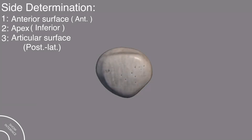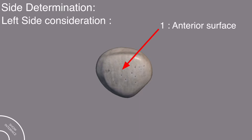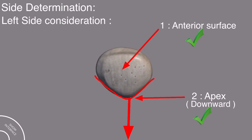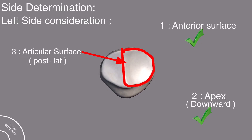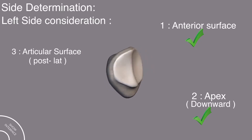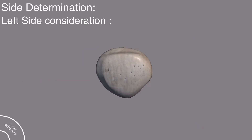So this is the right patella bone. Now if you consider this right patella bone as the left one, then the anterior surface comes on the anterior side and the apex is pointing downward. But the posterior lateral surface, which is this one, does not come on the lateral side — it comes on the medial side. So this is not the left patella bone.